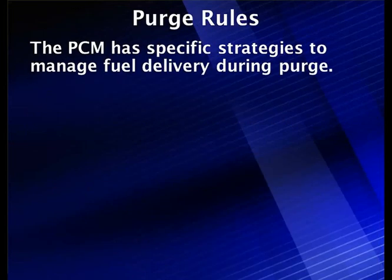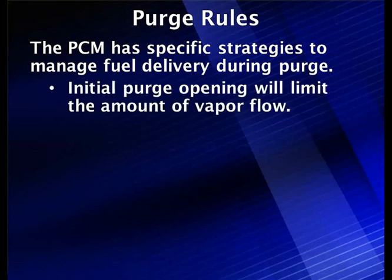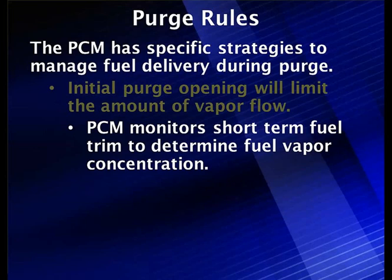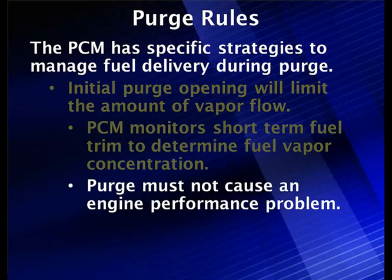The PCM has specific strategies about running purge in conjunction with fuel delivery. We can't just turn purge on, dump fuel vapor in, and hope the car runs okay. The initial purge opening will limit the amount of vapor flow until the PCM can correct for it. The PCM is going to monitor short-term fuel trim to determine the vapor concentration coming out of the canister. The vapor could be fuel vapor or fresh air — we don't know what's in the canister until we try.